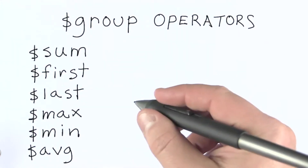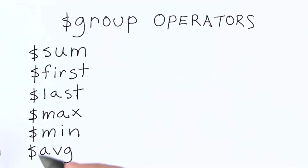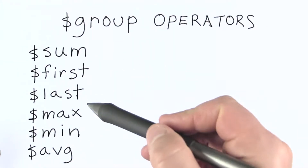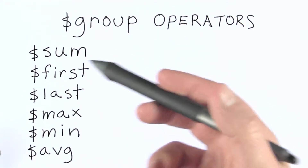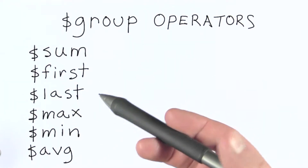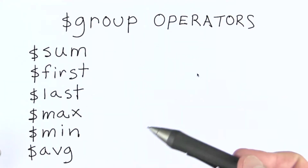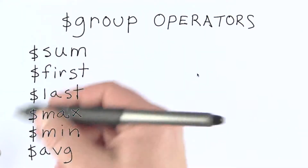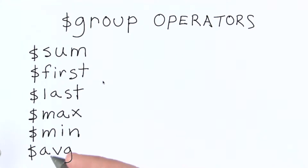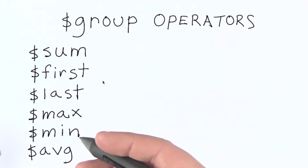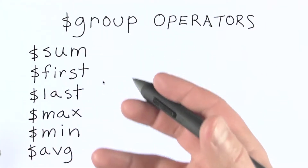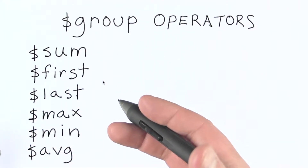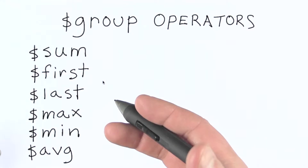Now I'd like to talk about group in a little more detail. By now you should understand that group's role is really to aggregate its input in some way based on the operator specified. Here are a list of operators that we can use in grouping documents together in the aggregation framework.